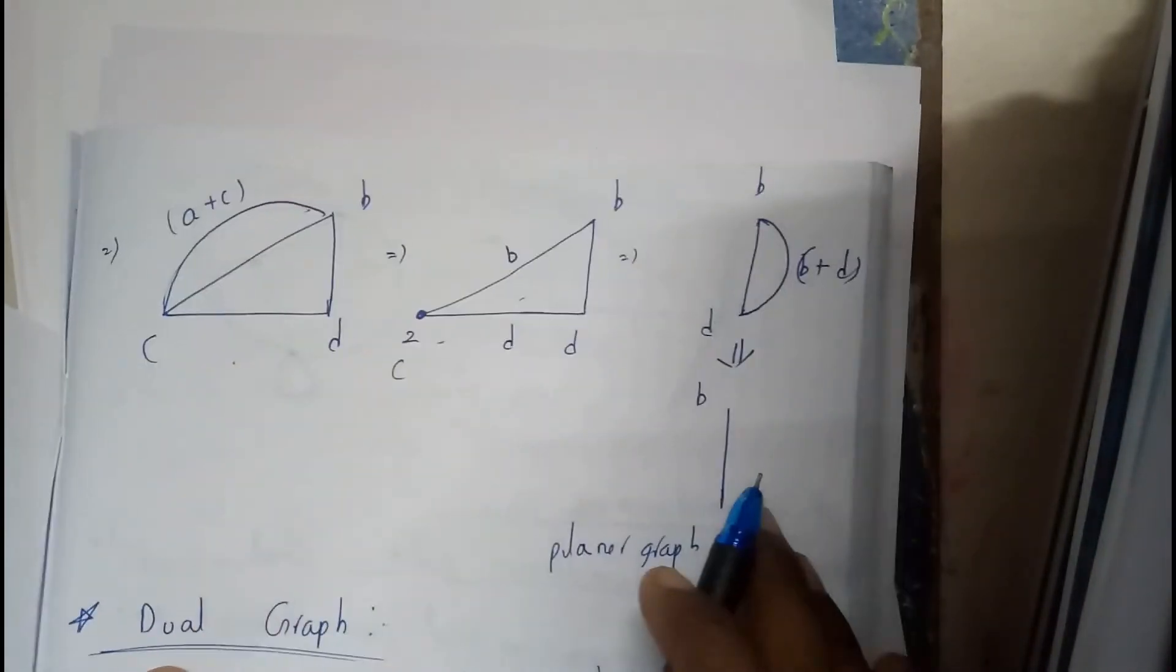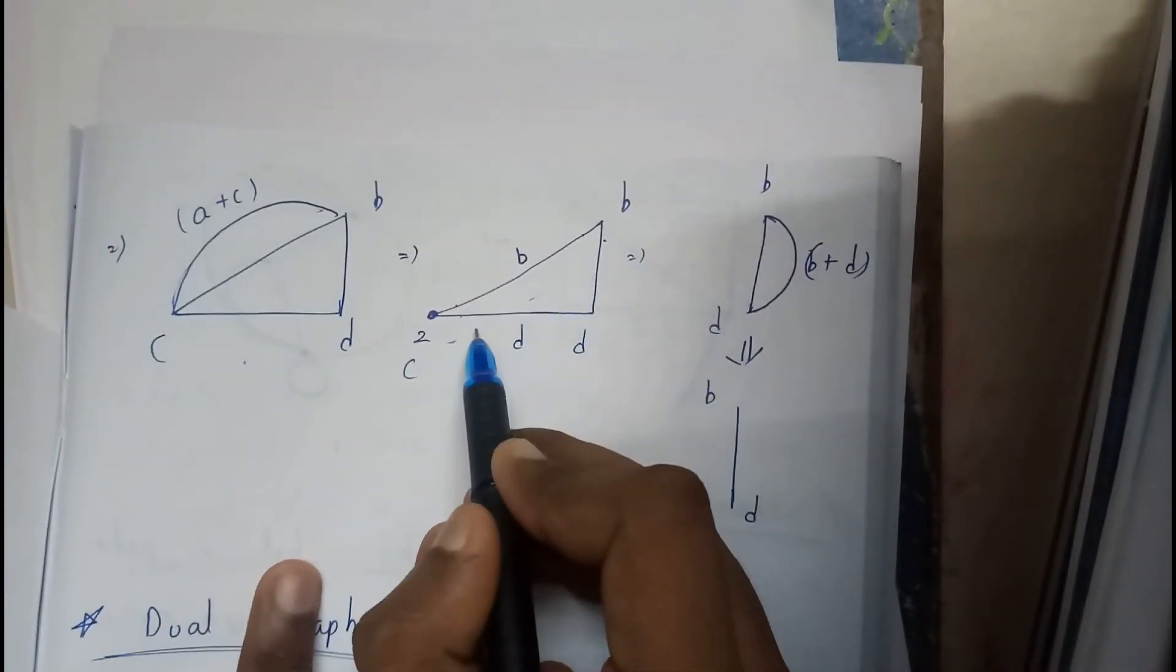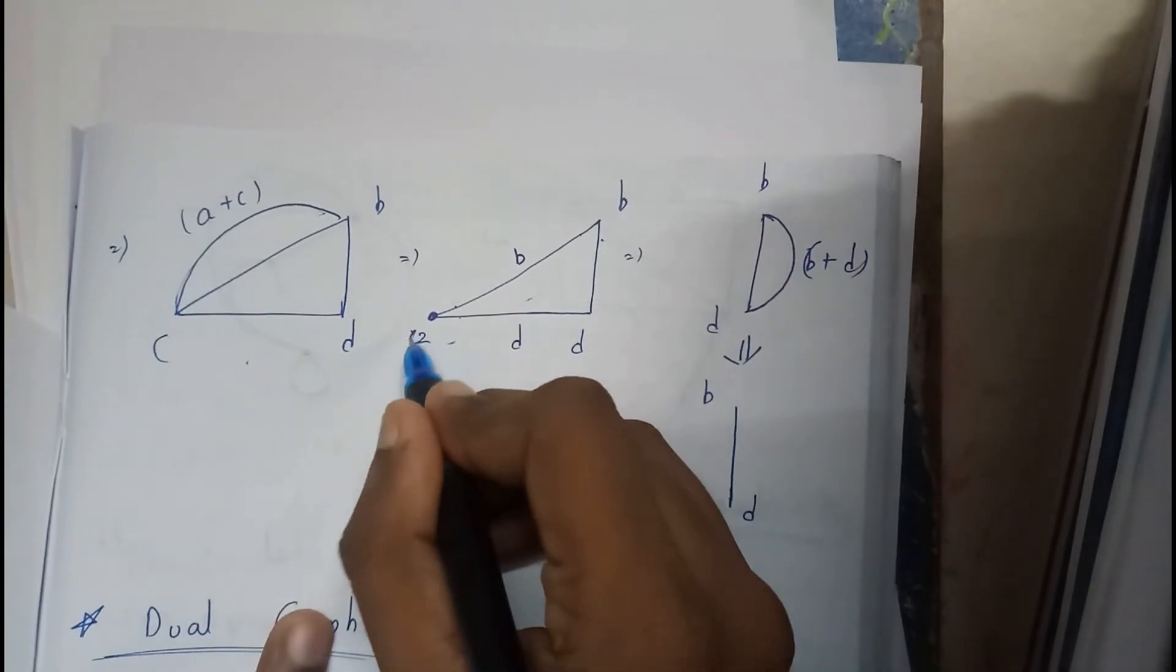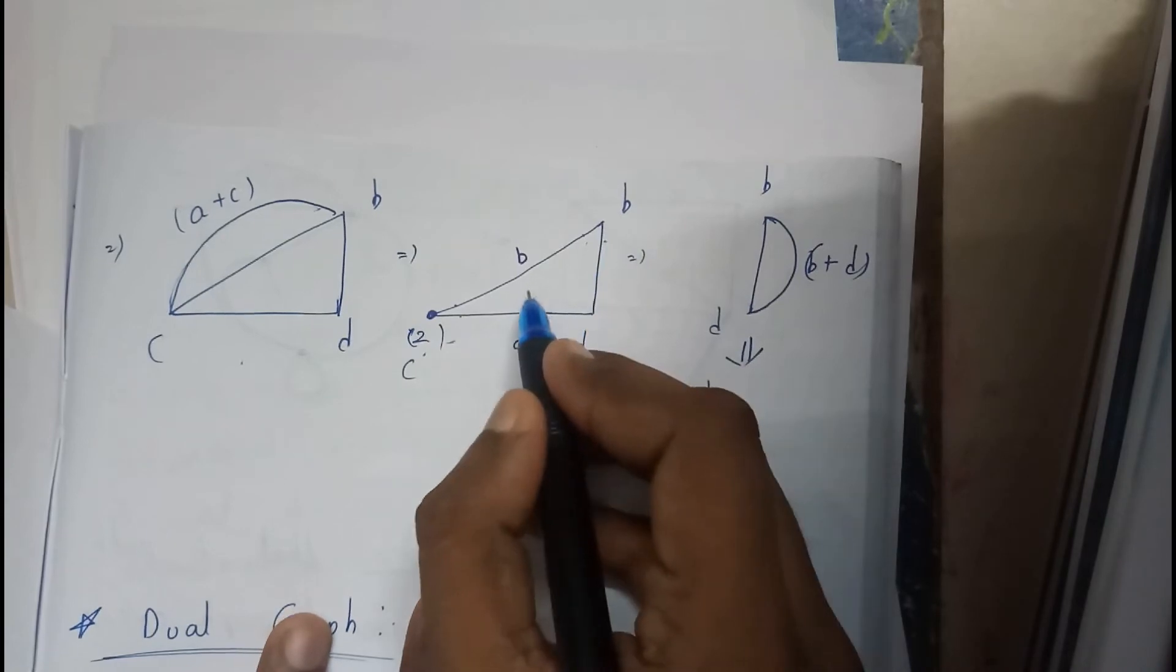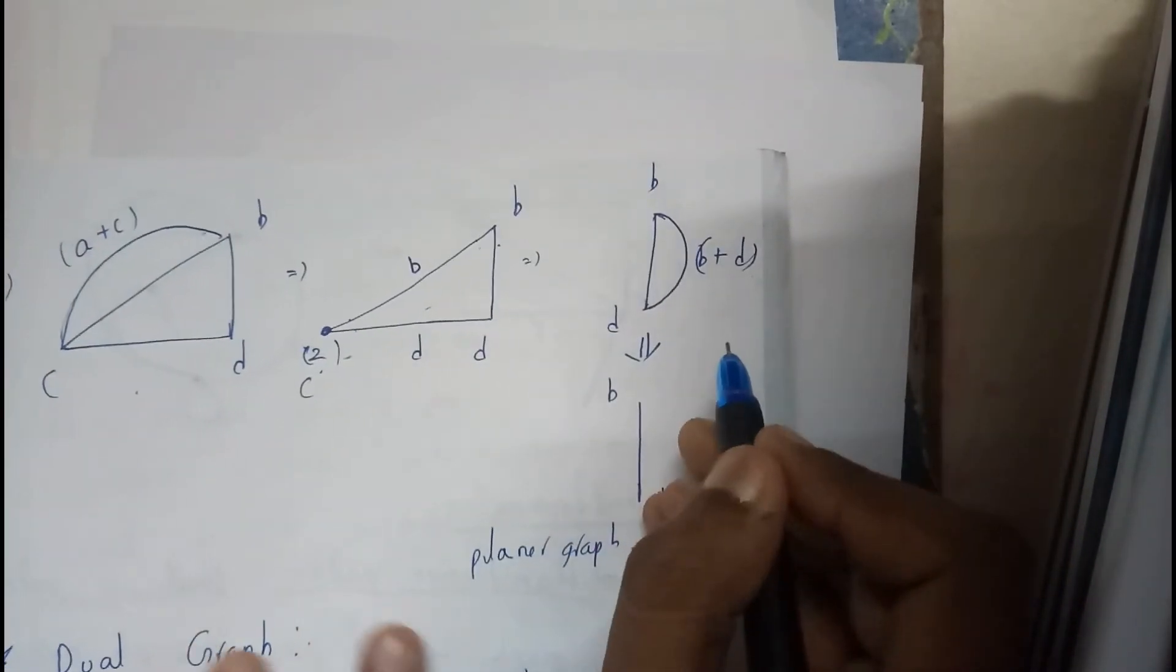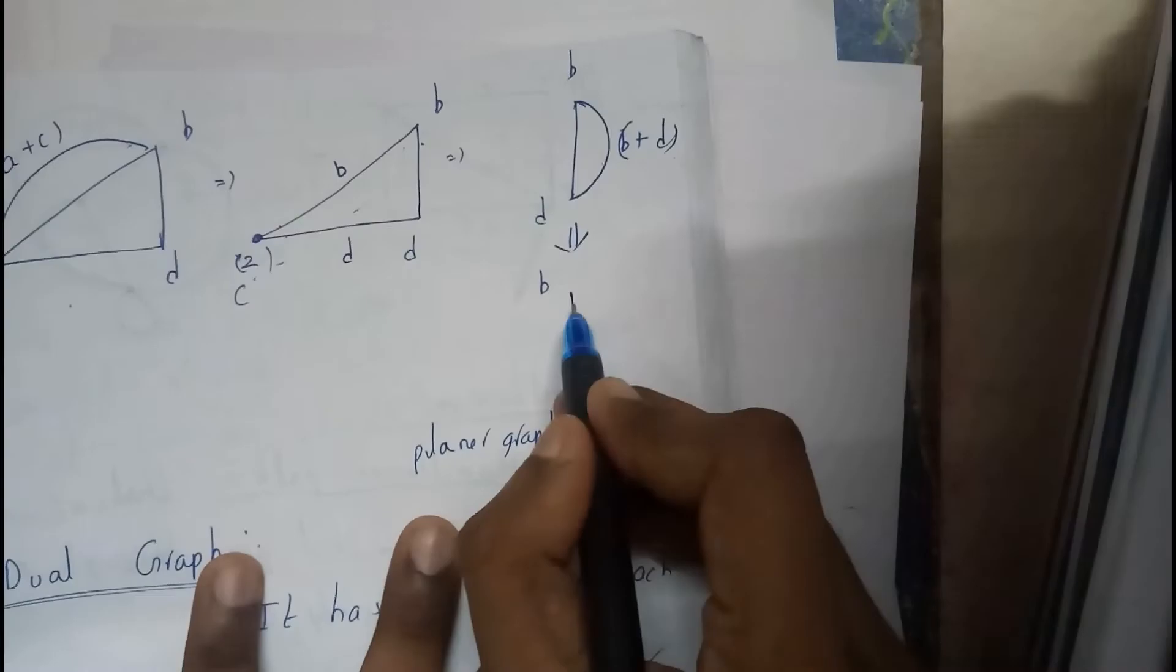Next, again here two, here two, take any one. So I took here, so now this is a path such that d plus b. Now again remove the parallel edge. So at the end you got a single edge, hence this is a planar graph.